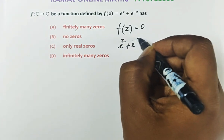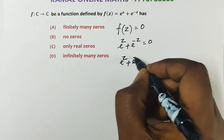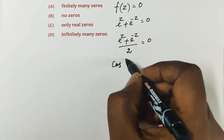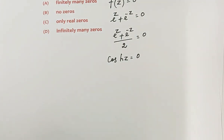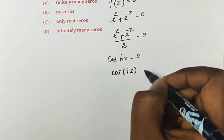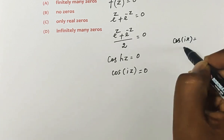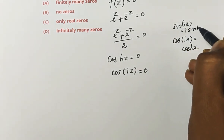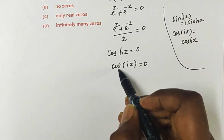Setting e^z + e^(−z) = 0. We know the relation: (e^z + e^(−z))/2 = cosh(z). So f(z) = 0 means cosh(z) = 0. Using the identity: cos(ix) = cosh(x) and sin(ix) = i·sinh(x). So cosh(z) = 0 means cos(iz) = 0.